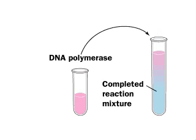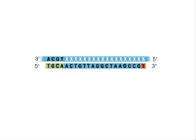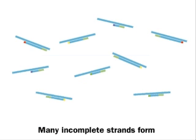As the new DNA strand grows, a random choice determines each step. Will a DNTP bind, letting the strand grow, or will a DDNTP bind, stopping growth and marking the strand with a color? As the process continues, many incomplete DNA strands form, each marked with an appropriate color.